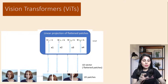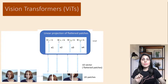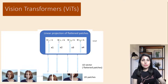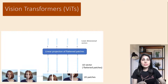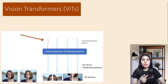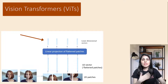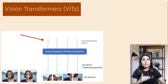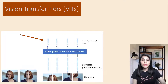The linear projection multiplies each element of the flattened sequence by a weight and adds a bias term. The weights and biases are learned during training. The result is a transformed vector of lower dimensionality, meaning it has fewer elements or components compared to the original vector — in other words, a reduction in the number of dimensions or features used to represent the data.